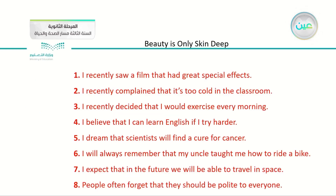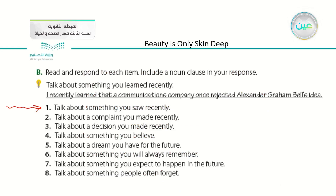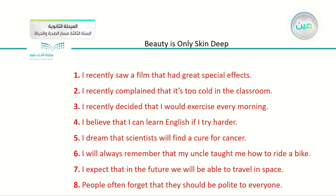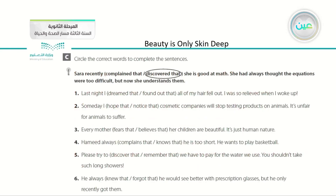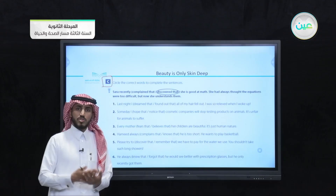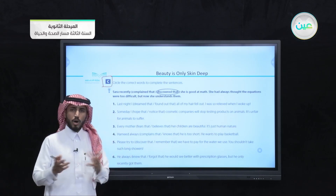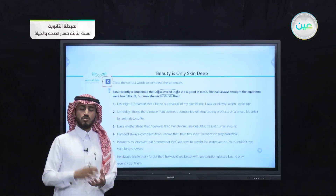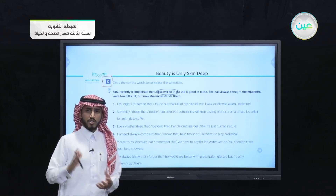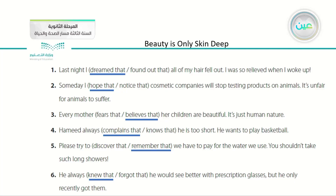For exercise B, the answer for the first item — 'talk about something you saw recently' — and the rest of the answers are shown in the slide. Then we moved to the workbook, exercise C: circle the correct words to complete the sentences. We have verbs used with the word 'that,' and two options in each sentence. We chose the correct answer, and the answers are shown in the slide.